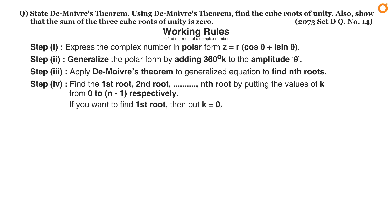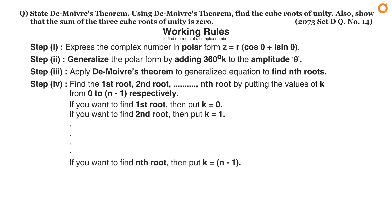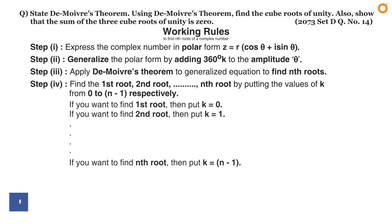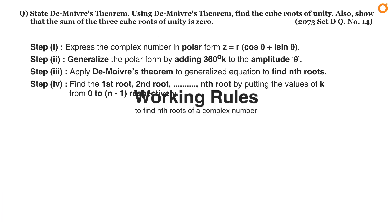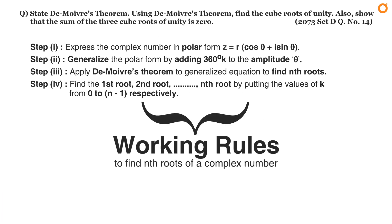In step four, find the first root, second root, and so on up to the nth root by substituting the values of k from 0 to n minus 1 respectively. If you want the first root, put k equals 0; for the second root, put k equals 1. In this way, applying these working rules allows us to easily find the nth roots of any complex number.